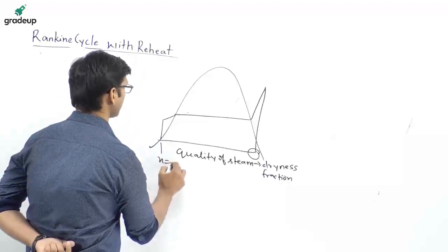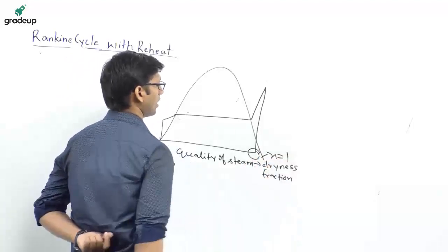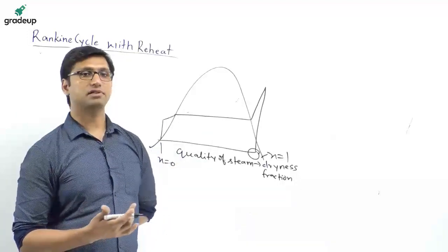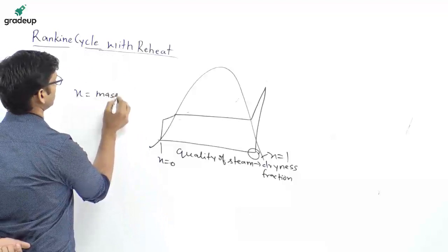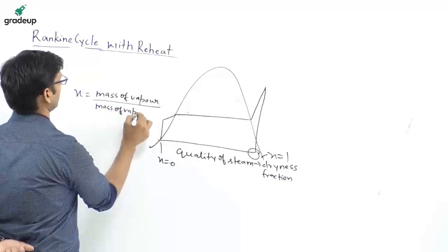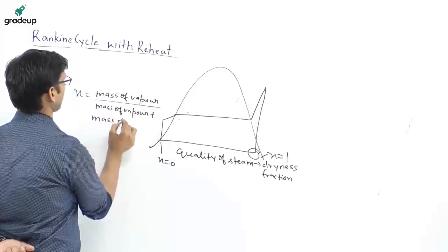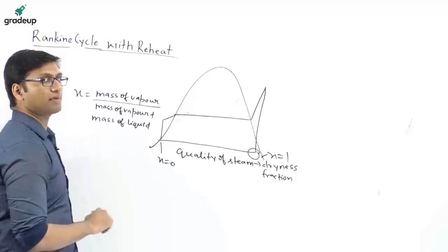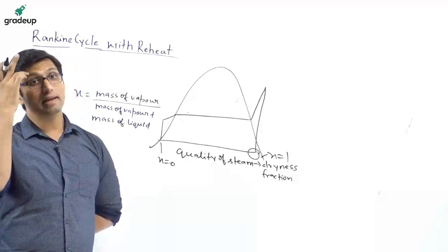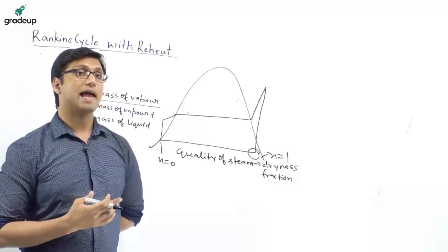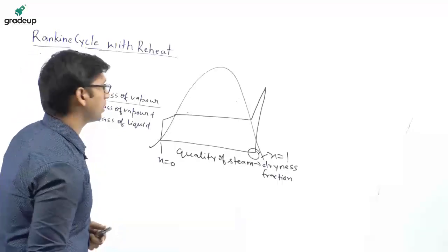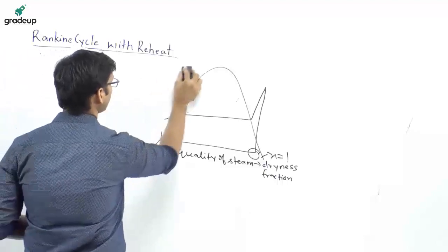At the saturated liquid point, dryness fraction x equals zero; at the saturated vapour line, x equals one — dryness fraction should be as high as possible. Reheating is done to increase the dryness fraction and also to increase the work output of the turbine. Those are the two purposes of reheating in the Rankine cycle: to increase dryness fraction and to increase the net work output of the turbine.